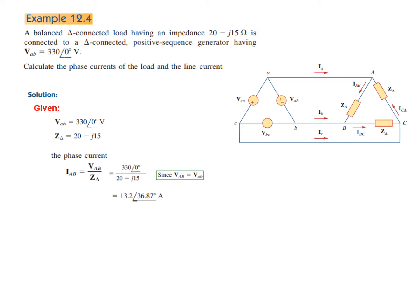Now that we've found one phase current, we can easily find the other two by just changing the angle — adding ±120°. So IBC = 13.2∠−156.87° (adding −120°) and ICA = 13.2∠83.13° (adding +120°). These are the three phase currents. Now we need to find the line current. For a balanced system there is a simple relation between line and phase current.